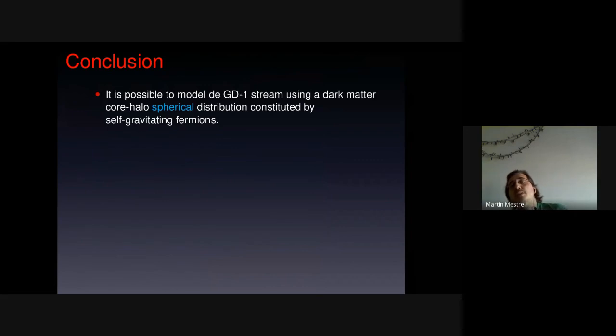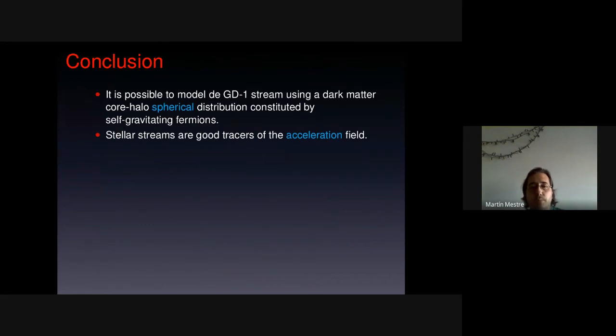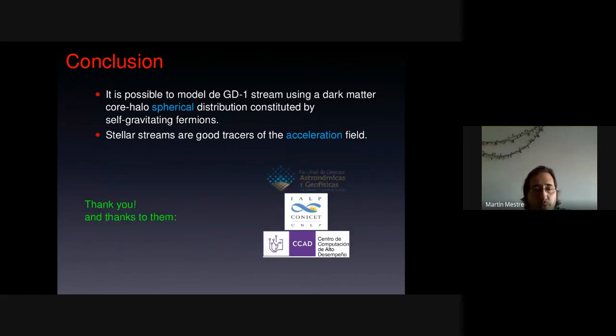Well, the conclusions are two. It is possible to model the GD1 stream using a dark matter core halo spherical distribution constituted by self-gravitating fermions. And that stellar streams are good tracers of the acceleration field. Well, thank you to all of you. I am open to questions if there is time.